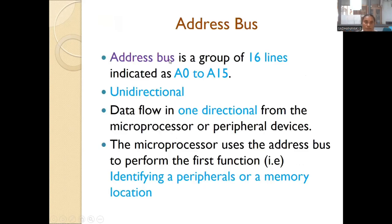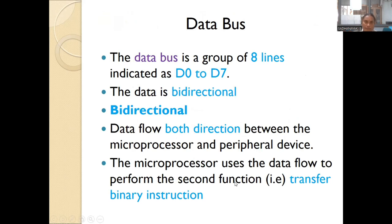The address bus is a group of 16 lines indicated as A0 to A15. It is unidirectional — data flows in one direction from the microprocessor to the peripheral device. The microprocessor uses the address bus to perform the first function: identifying the peripheral memory location. The data bus is a group of 8 lines indicated as D0 to D7. It is bidirectional — data flows in both directions between the microprocessor and the peripheral devices. The microprocessor uses the data bus for the second function: transferring binary information.